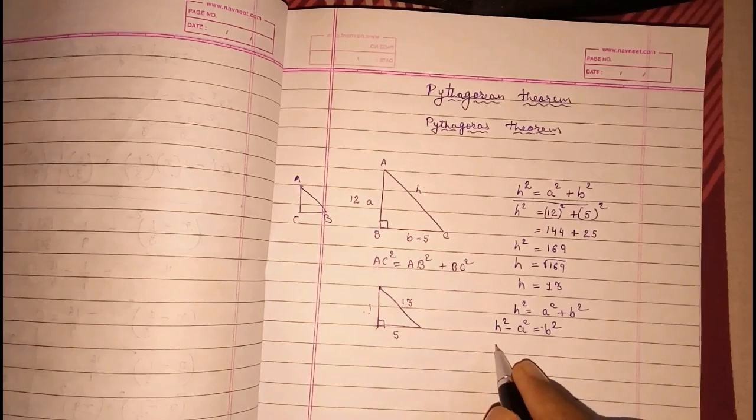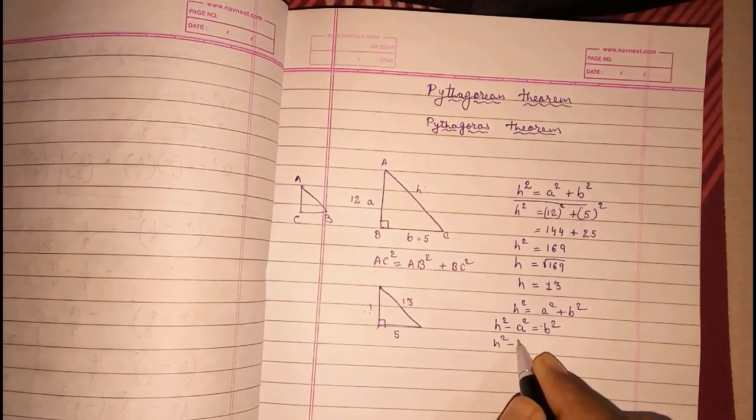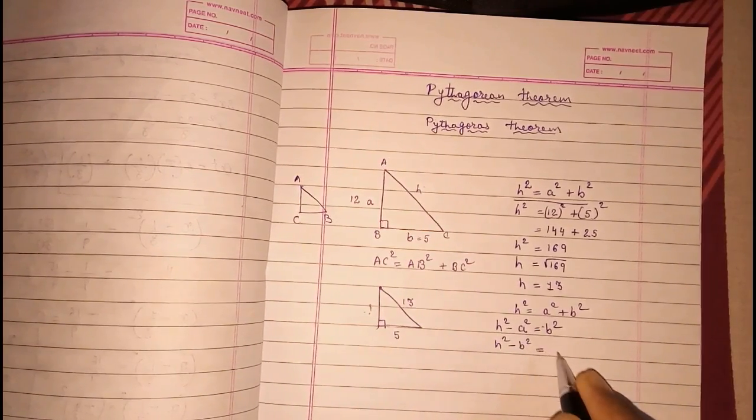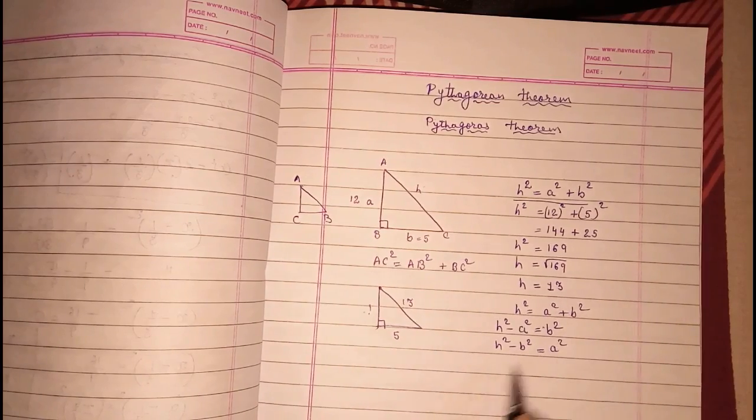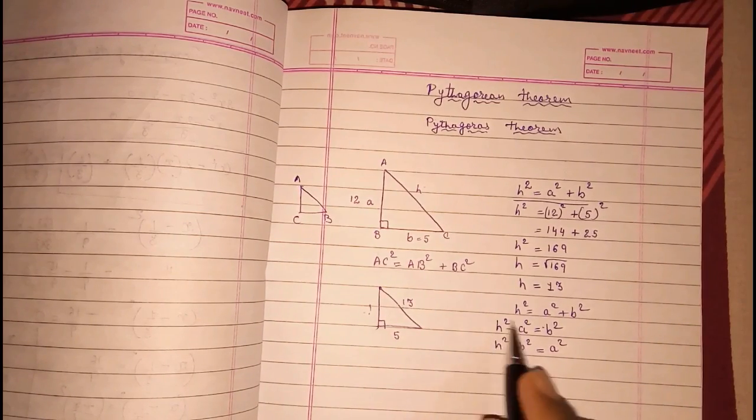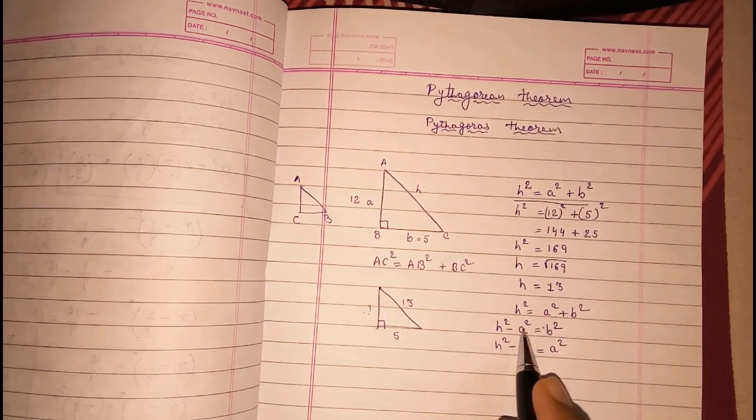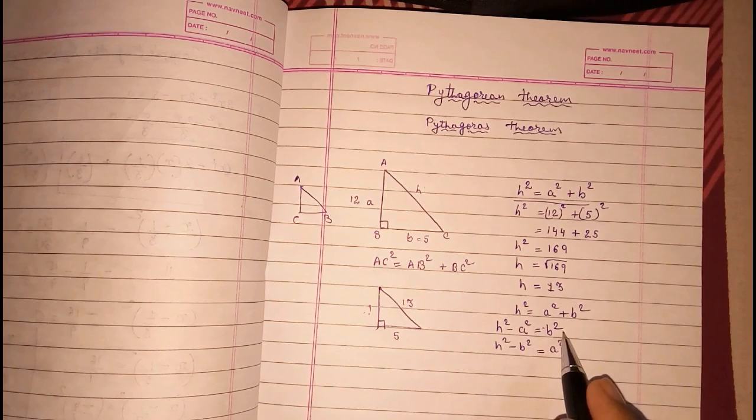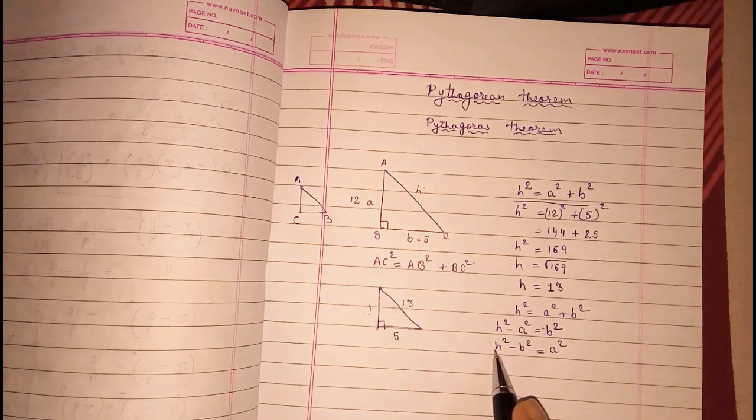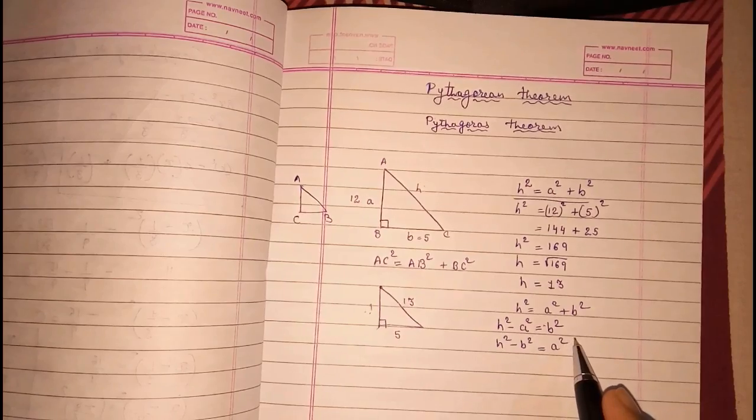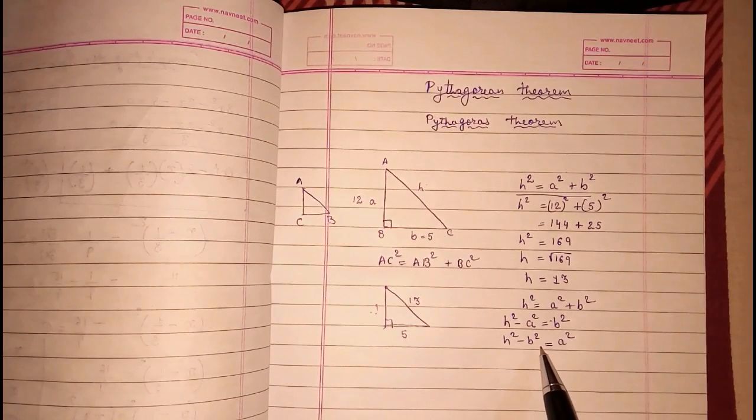A or B will never come in front, and they generally—sometimes they try A² - H² = B², or B² - H² = A². These are the simple mistakes they do and they lose their marks.